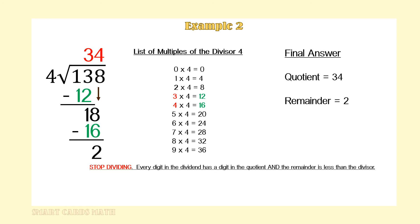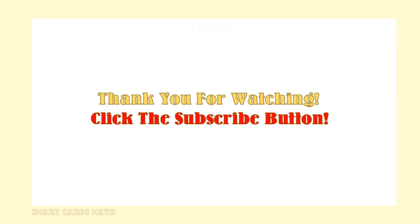This is where the division process ends: each digit in the dividend has a digit in the quotient, and the remainder 2 is less than the divisor 4. Thank you for watching — stay tuned for a new tutorial next week.